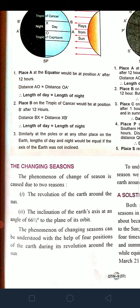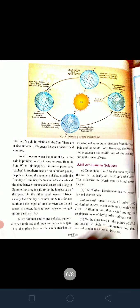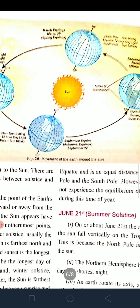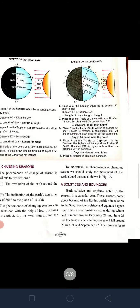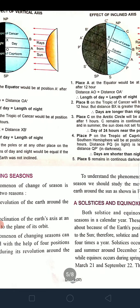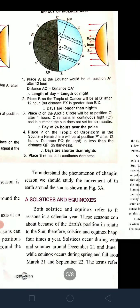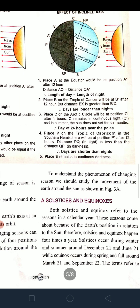This phenomenon of changing seasons can be understood with the help of four positions of the earth depicted in this diagram. There are basically four positions: two are solstices and two are equinoxes. Both solstices and equinoxes refer to seasons in a calendar year, and these seasons come about because of the earth's position in relation to the Sun.